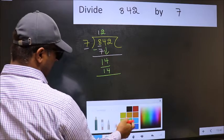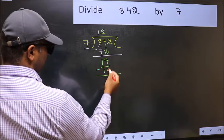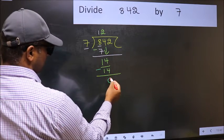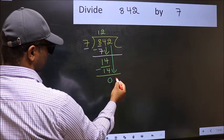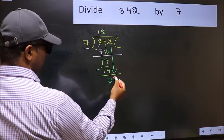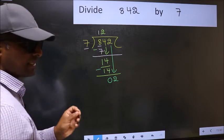Now, you should subtract. 14 minus 14, 0. After this, bring down the beside number. So, 2 down. After this step, the mistake happens.